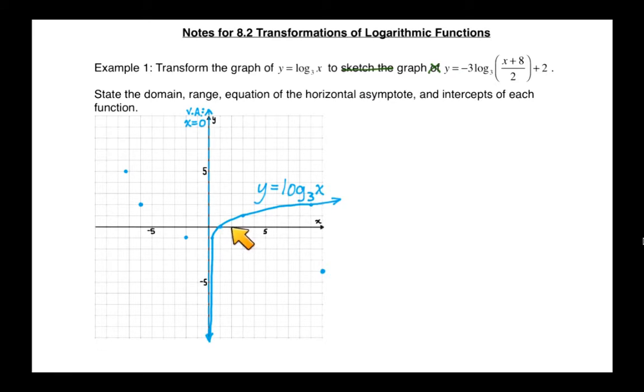So we're sitting at 2,0 and the last thing we need to do is we need to shift it left 8 and up 2. So starting here, I'm going to go left 8 and up 2. That explains that point.